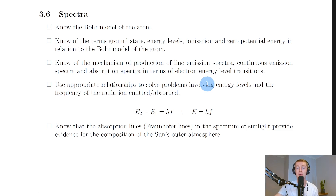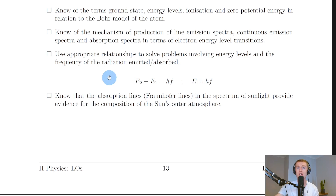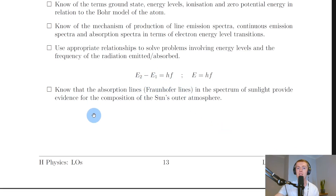You need to use appropriate relationships to solve problems involving energy levels and the frequency of radiation emitted or absorbed. Remember E = hf, which relates a photon's energy to Planck's constant and its frequency. For transitions between two energy levels, we write E₂ − E₁ = hf, where E₂ is the higher and E₁ is the lower energy level. You can also write this as ΔE = hf.